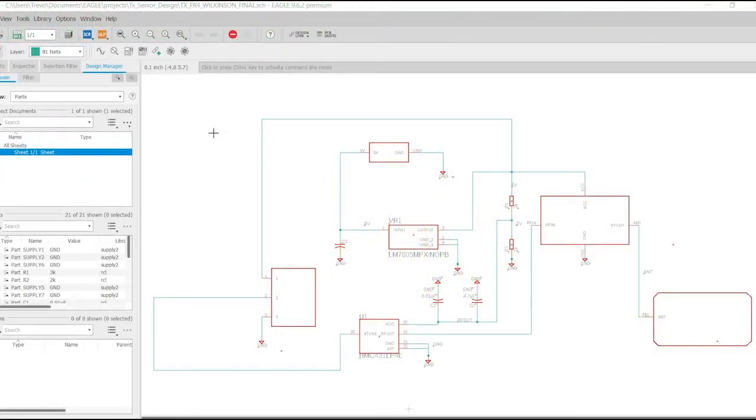Now we are looking at the schematic of the transmitter. The main components to focus on are the VCO and the amplifier. The VCO is fed 4.8 volts through a potentiometer and then this gives it a 5.8 gigahertz signal straight into the amplifier which then feeds into the antenna.